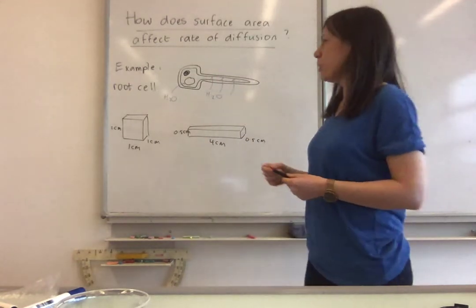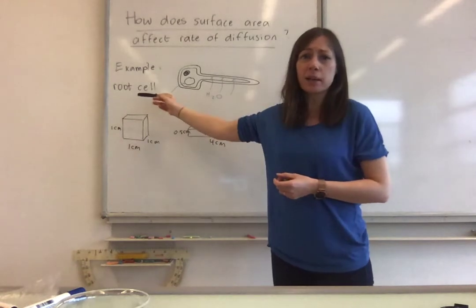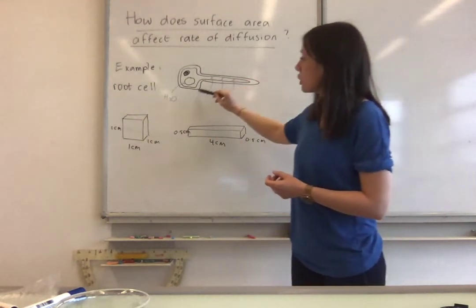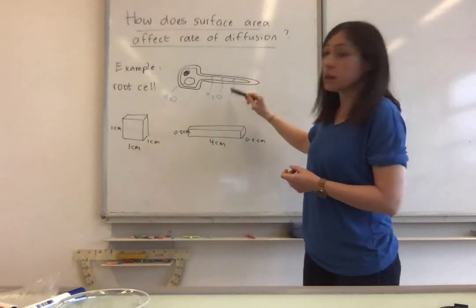An example is a root cell, so root cell in plants, that has a large surface area, a special shape, long shape, so it can absorb lots and lots of water.